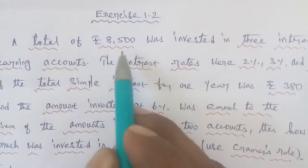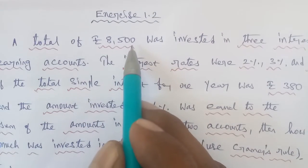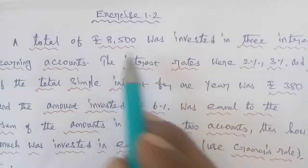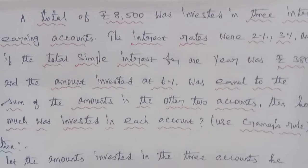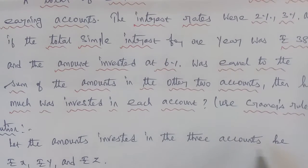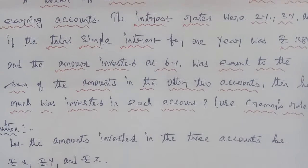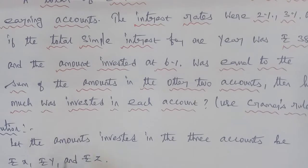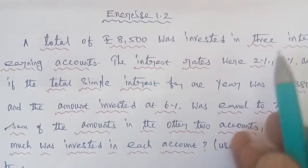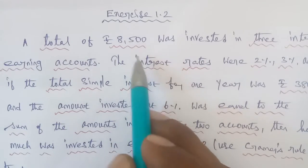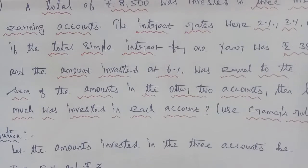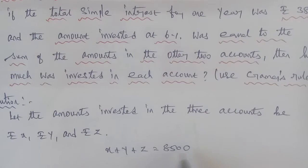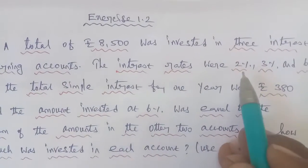So there are three accounts and 8500 rupees is invested across them. Let the amounts invested in the three accounts be rupees x, rupees y, and rupees z. From the first condition, we form Equation 1: x plus y plus z is equal to 8500.